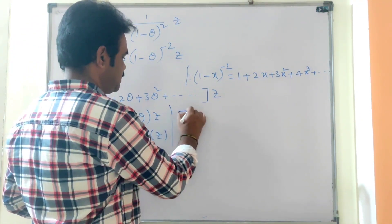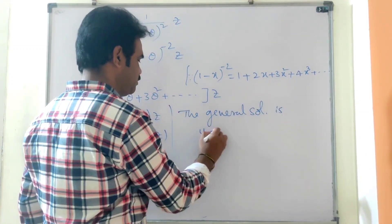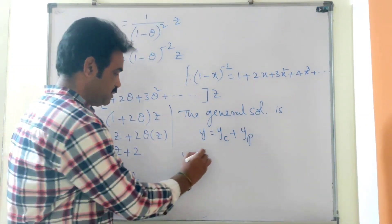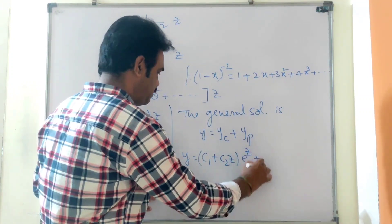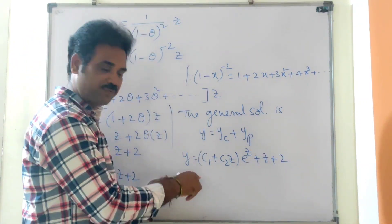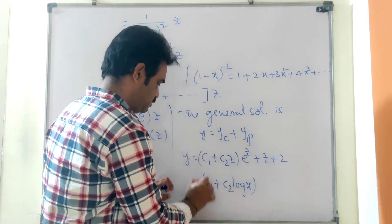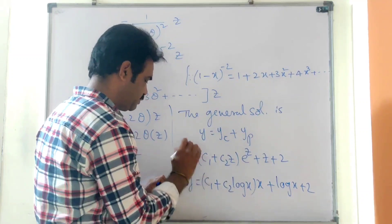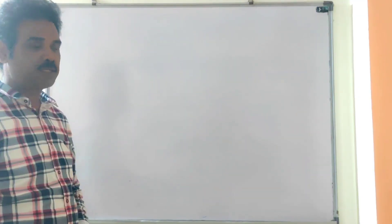The general solution of the given differential equation is y = yc + yp, that is y = (c1 + c2·z)·e^z + z + 2. Now writing z in terms of x, where z = log x and e^z = x: y = (c1 + c2·log x)·x + log x + 2. This is the required solution.